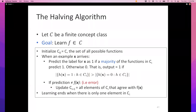A concept class is said to be learnable under this model if there exists at least one algorithm that can make a polynomial number of mistakes. As a proof of concept, I presented the halving algorithm. For a finite concept class, the halving algorithm keeps track of all concepts, initializes a set C-zero with all concepts, and at each round removes every function that disagrees with the current example.